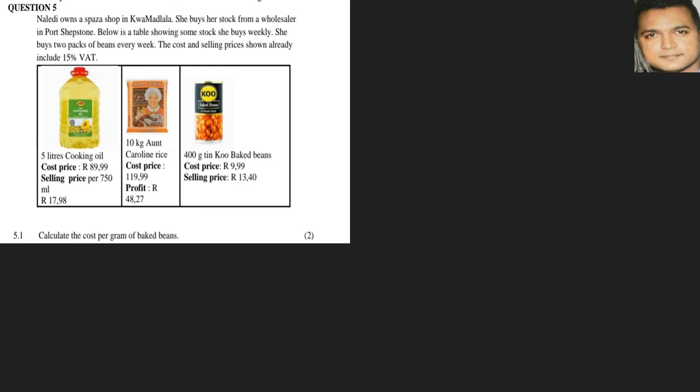Question 5.1: Calculate the cost per gram of baked beans. So all we need to do is the cost per gram will just be looking at two things. It will be the price. We are looking at the price here, and we see it's 400 grams. So all we need to do is how much is one gram.